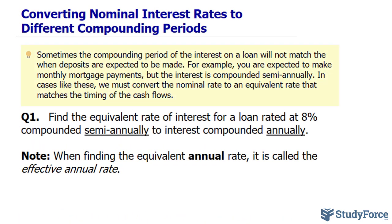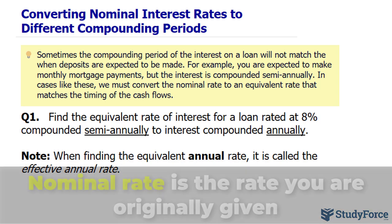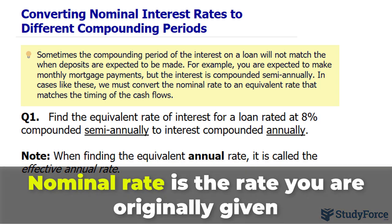Sometimes the compounding period of the interest on a loan will not match when deposits are expected to be made. For example, you're expected to make monthly mortgage payments, but the interest is compounded semi-annually. In cases like these, we must convert the nominal rate to an equivalent rate that matches the timing of the cash flow.